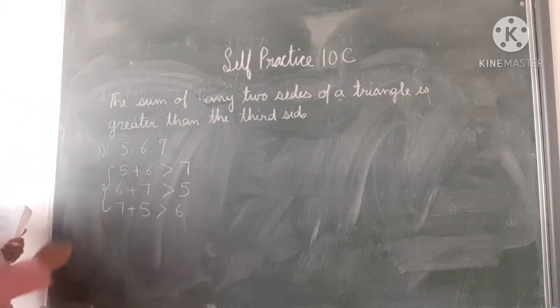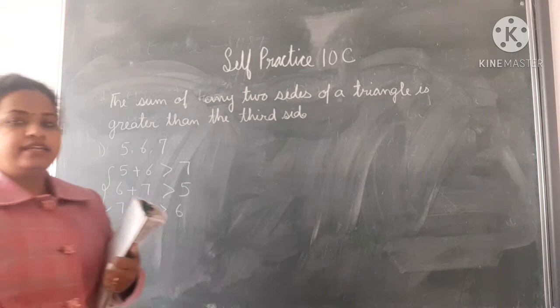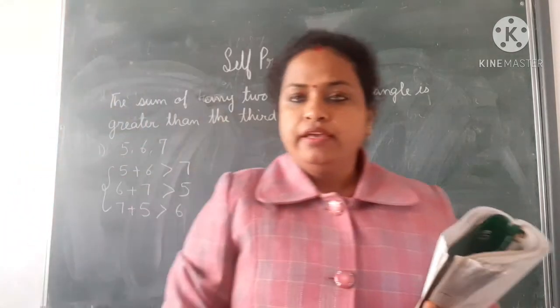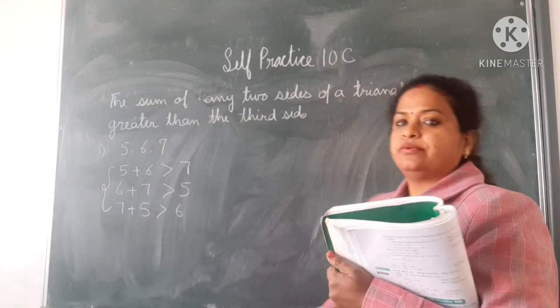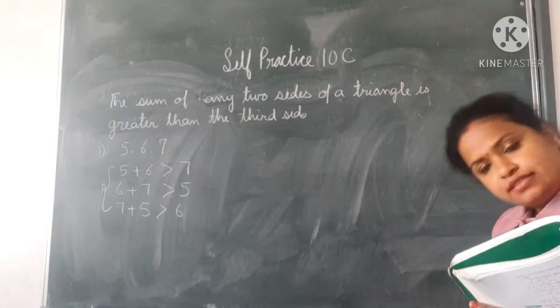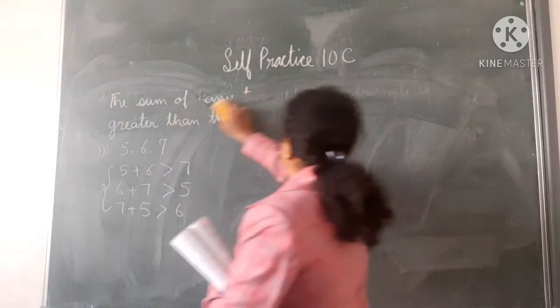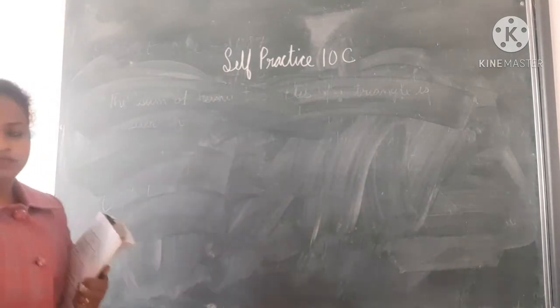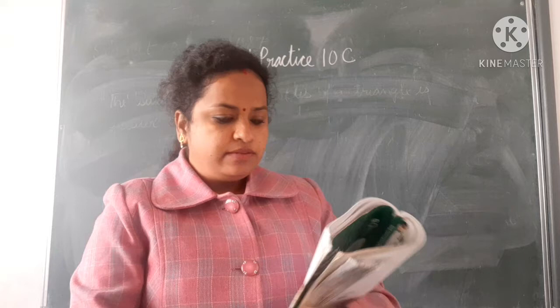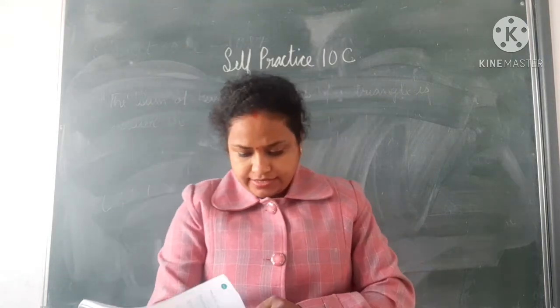If these properties are contained, then it is said that it is a triangle. So the sum of two sides of a triangle is always greater than the third side of a triangle. Now let us solve self practice 10C.